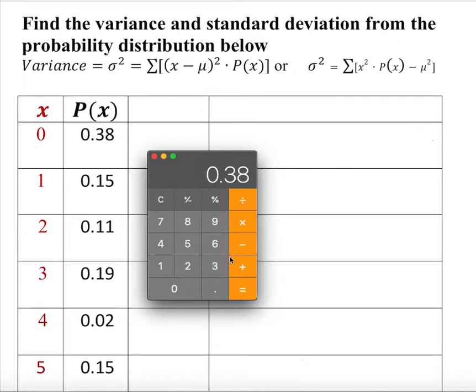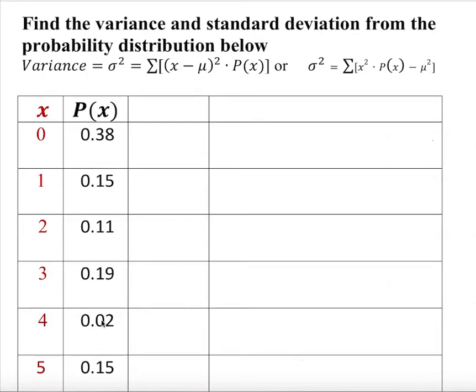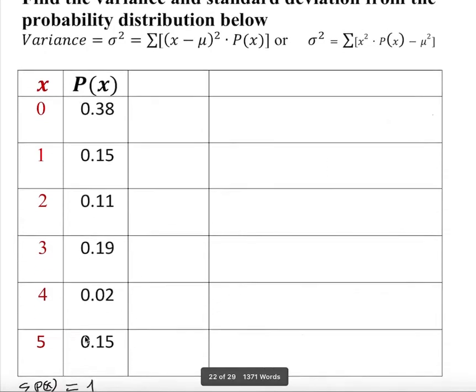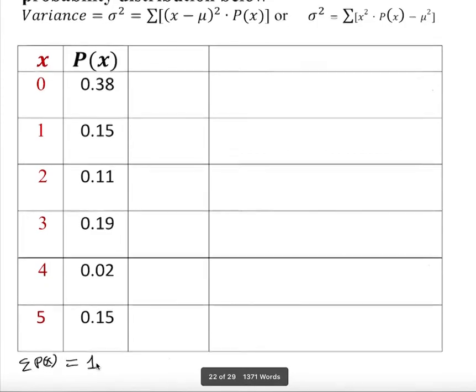We add all of this if it sums up to 1 then it is a probability distribution table. So 0.38 plus 0.15 plus 0.11 plus 0.19 plus 0.02 plus 0.15 is 1. So that sum up to 1. So this is a probability distribution table.